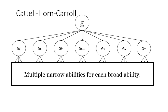g is still your general factor and that's your overall intelligence. Gf and Gc are the same that we've talked about. Glr is long-term storage and retrieval and efficiency. Gsm is short-term memory. Gv is visual perceptual. Gs is processing speed. And Ga is auditory perception. You see this big box down here that says multiple narrow abilities for each broad. So these g's are your broad abilities, and each one of them will have multiple narrow abilities within them.